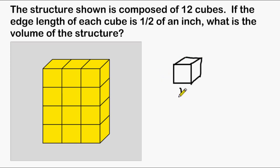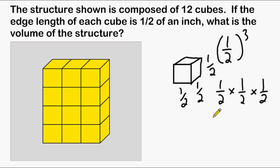It is given that the edge length of each side of the cube is one half of an inch. So to find the volume of this cube, we just have to raise one half to the third power. In other words, we are going to multiply one half by one half by one half, and that will give us the volume of each individual cube.